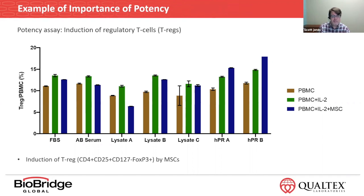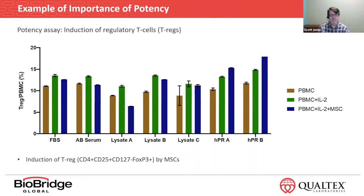The take-home message is that even though the cells look the same from what the industry uses to characterize them, their function is different. That is why regulatory agencies are harping on potency — because you want to make sure that your product, when you're giving it to patients, has the appropriate level of potency. It may look the same on characterization tests, it may not contain infectious diseases and pass safety, but you need to also make sure that it truly has potency and is really going to do what it is supposed to do.